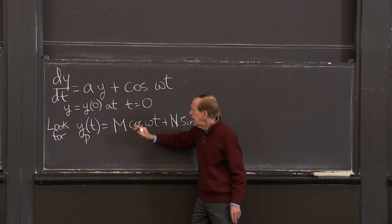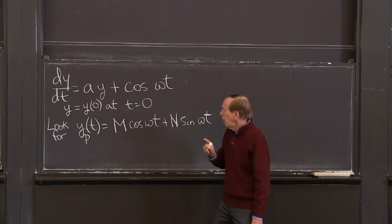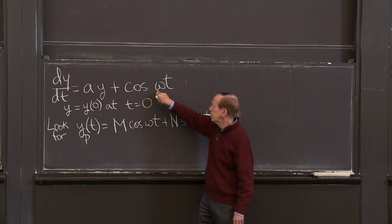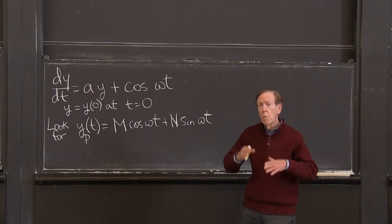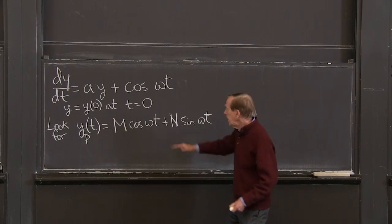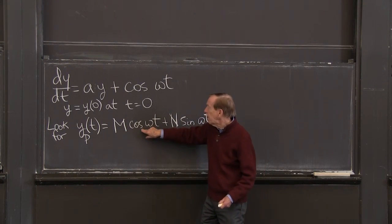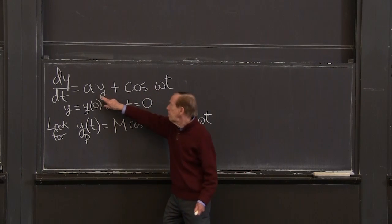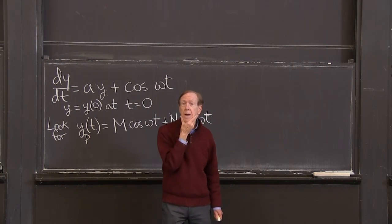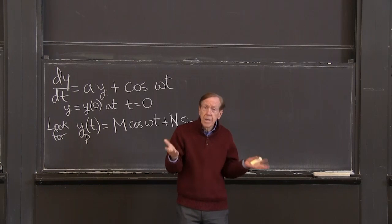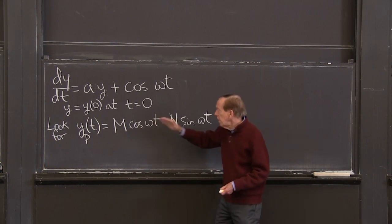Here's the point. I'm looking for a particular solution. It would be nice if we could say the particular solution was just some multiple of the cosine, but that won't work — that makes this problem one step harder than the exponential. We need to allow the sines in there. If I tried only a cosine, I'd have A times the cosine giving cosines, but the derivative of a cosine is a sine function. So sines are going to get in there, and we have to allow them into the solution.